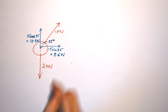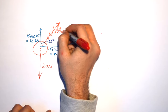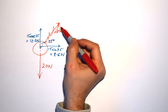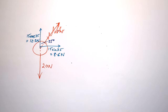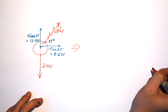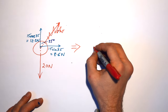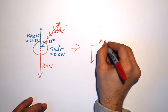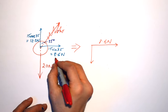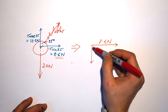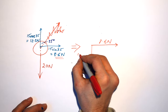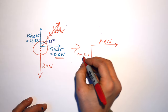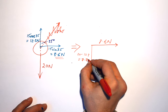Now that I've resolved the 15 Newtons into vertical and horizontal components, I can forget about the original vector. These two perfectly represent it, but more handily because they are vertical and horizontal. So now I just have vectors at right angles to each other. Horizontally, I only have 8.6 Newtons. Vertically, I have 20 Newtons pulling downwards and 12.3 Newtons pulling upwards, so the net vertical force is 20 minus 12.3, which equals 7.7 Newtons.